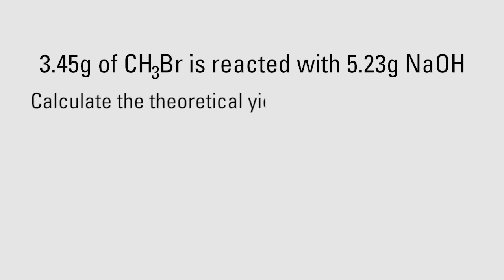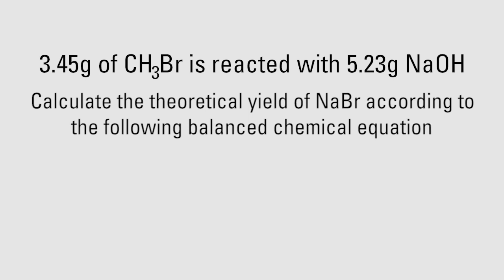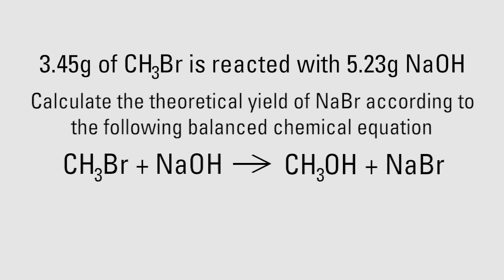3.45 grams of methyl bromide are reacted with 5.23 grams of sodium hydroxide. Calculate the theoretical yield of sodium bromide according to the following balanced chemical equation: methyl bromide plus sodium hydroxide yields methanol plus sodium bromide.